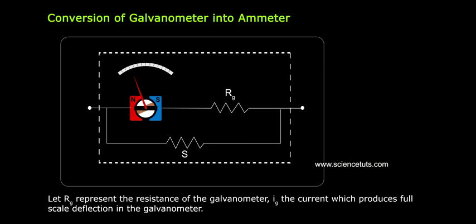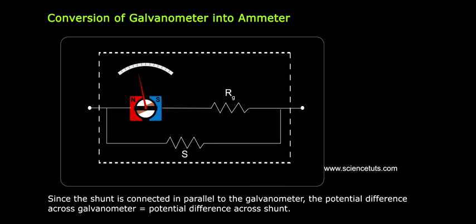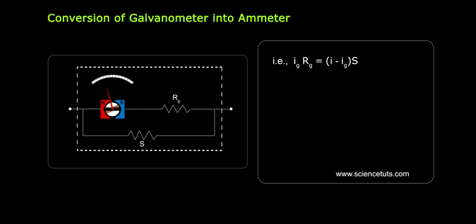Let Rg represent the resistance of the galvanometer, Ig the current which produces full-scale deflection in the galvanometer. Since the shunt is connected in parallel to the galvanometer, the potential difference across galvanometer equals the potential difference across shunt.